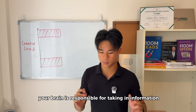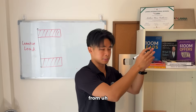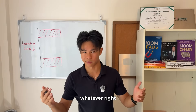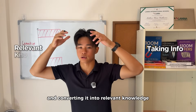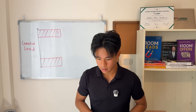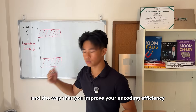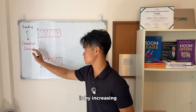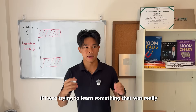Your brain is responsible for taking in information from the lecturer, your teacher, the Google Slides, and converting it into relevant knowledge. That process is actually called encoding. And the way that you improve your encoding efficiency is by increasing the amount of cognitive load that you have.